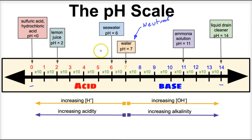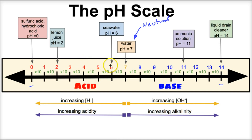Another important thing to understand about the pH scale is that it's exponential. So if we move from a pH of six to a pH of five, a solution with a pH of five has 10 times more hydrogen ions than a solution with a pH of six. If we compare a pH of four to a pH of six, a solution with a pH of four has 100 times more hydrogen ions compared to a pH of six.